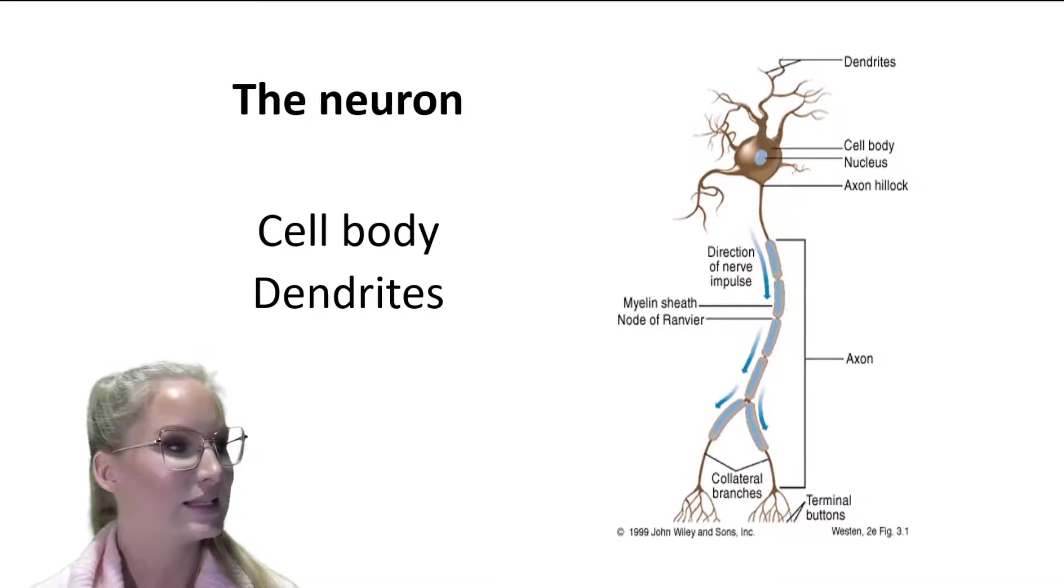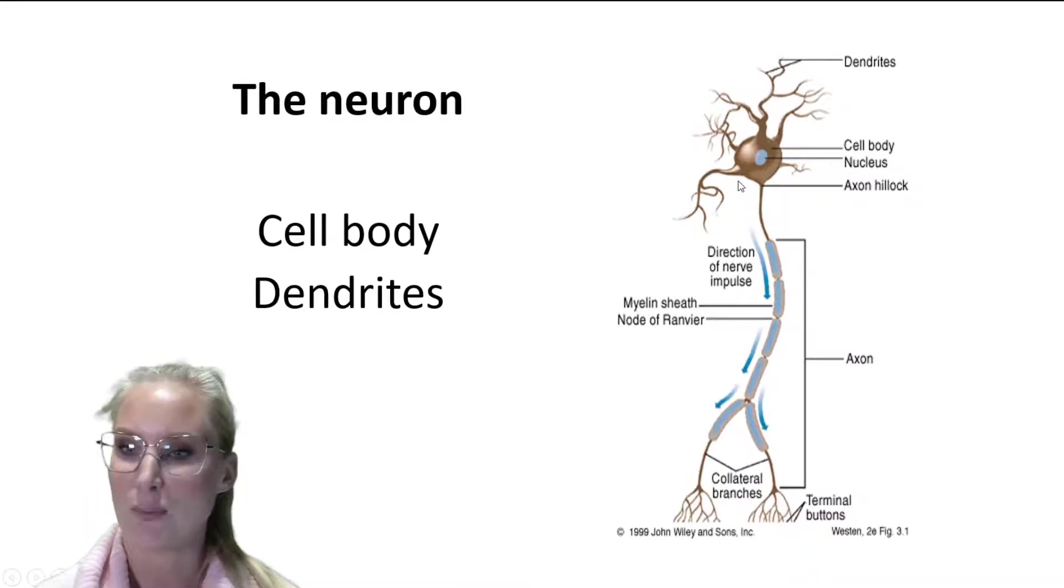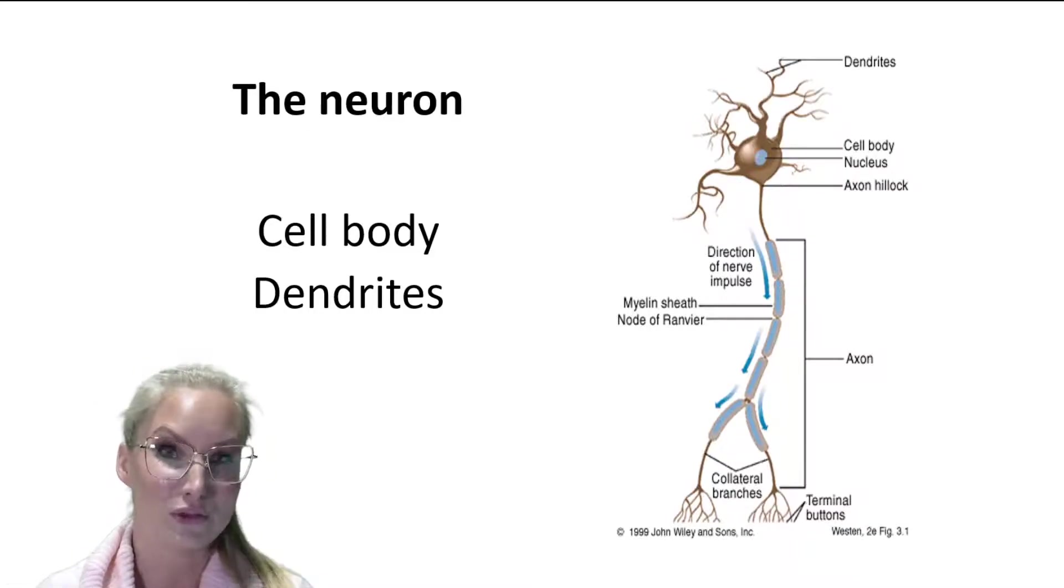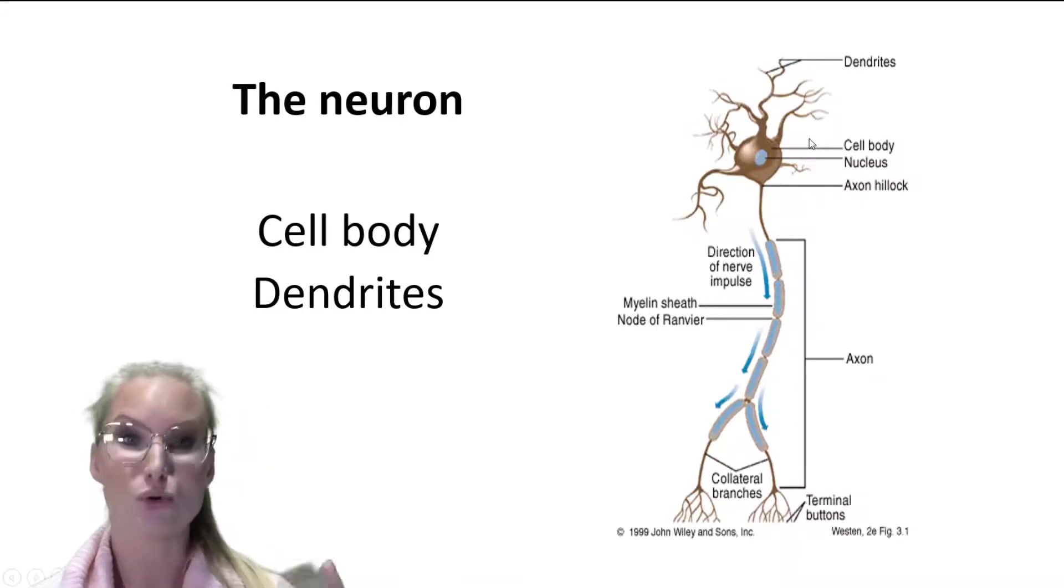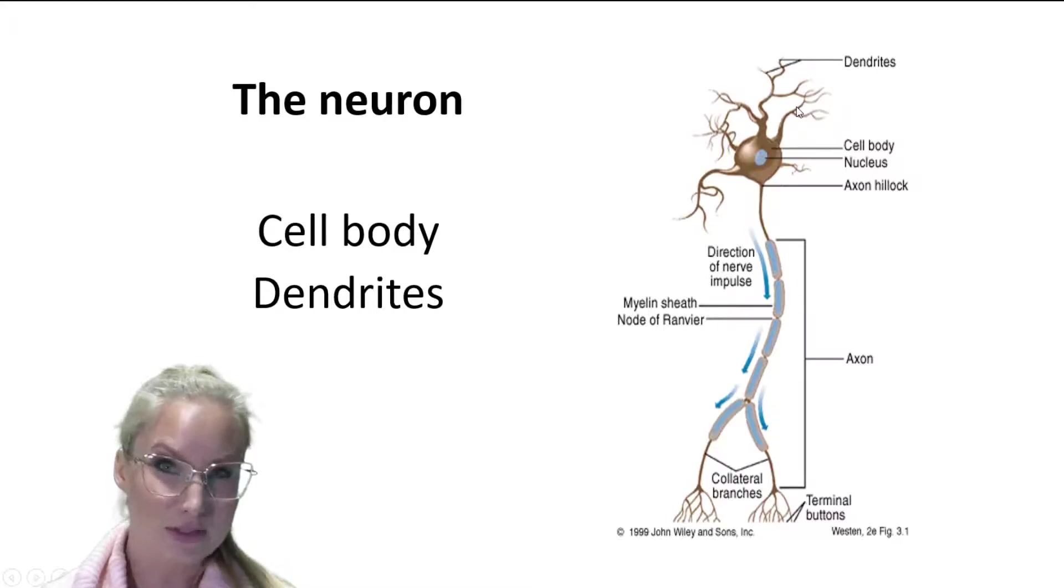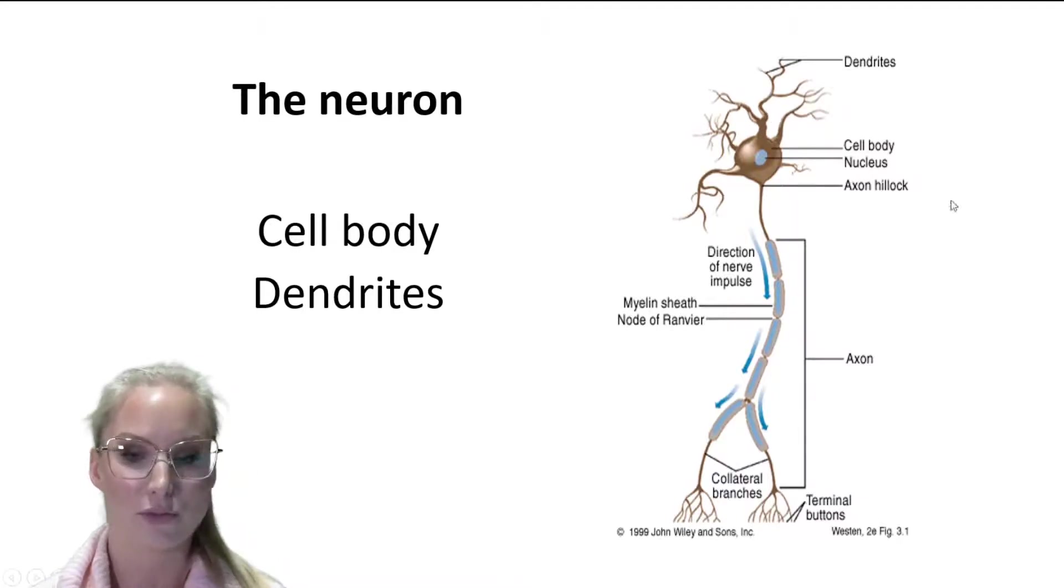So the next thing is the dendrites. The dendrites are these little bushy tree-like structures that we can see protruding out here from the cell body. And they are basically collecting and receiving information from other neurons. So their job is to receive signals. It is important to mention that the cell body also receives signals from other neurons. But dendrites can be a couple of millimeters long. So they allow you to collect signals from neurons that are a little bit further away.